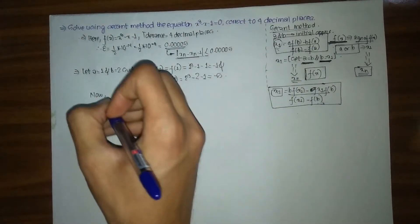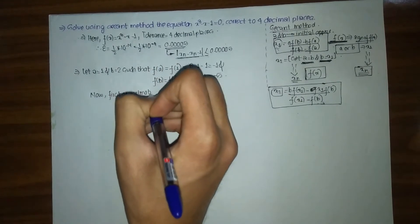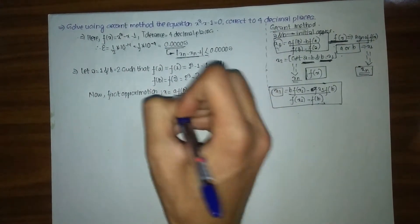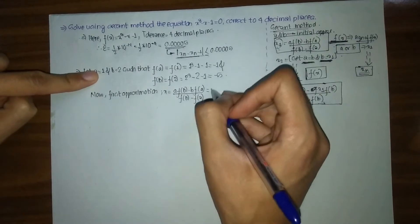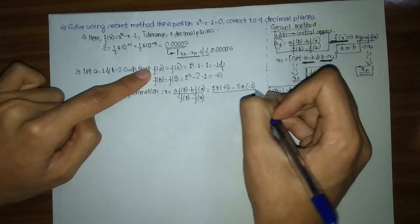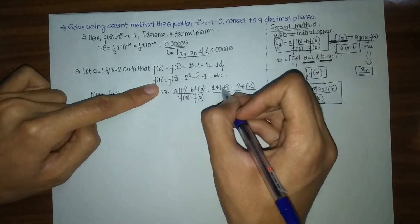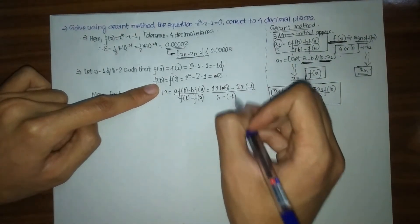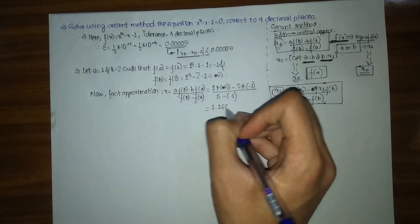Our first approximation x1 equals A·F(B) minus B·F(A) divided by F(B) minus F(A). We have A as 1, F(B) as 5, B as 2, and F(A) as minus 1. Computing this gives us x1 equals 1.1667.